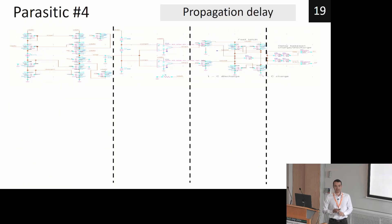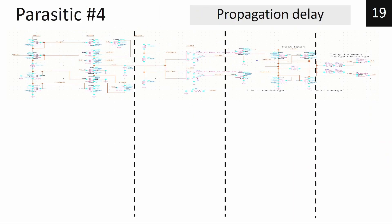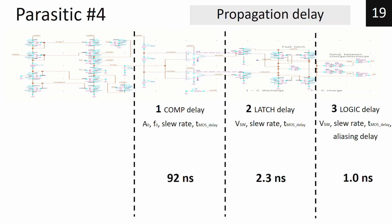The last parasitic is propagation delay. The propagation delay I divided in four stages. So the first one is caused by comparator and it's in a range of 92 nanoseconds. Then we have 2.3 nanosecond delay caused by the latch. The logic causes the least amount of delay, it's one nanosecond, and then we have 40 nanoseconds for switches. So again we see that the comparator is the worst performing component in the chain.